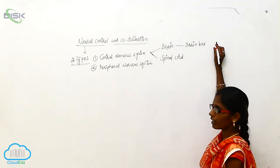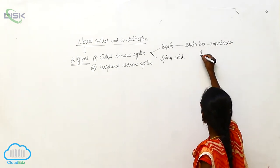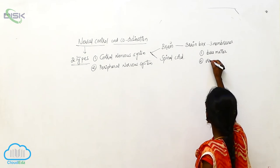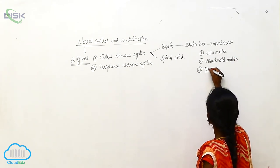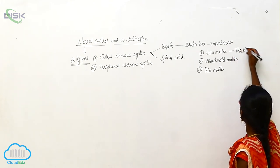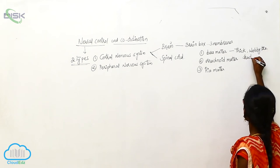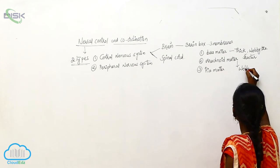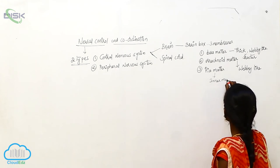The Brain is covered by three membranes. The first one is Dura Mater, the second is Arachnoid Mater, and the third is Pia Mater. Dura Mater is a thick and webby-like structure, and Arachnoid Mater is also a webby-like structure.